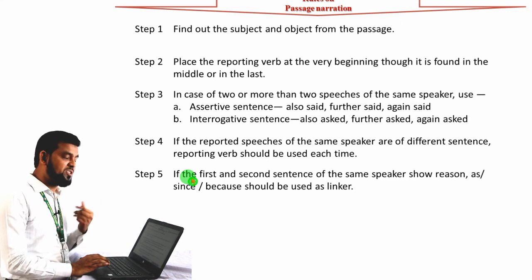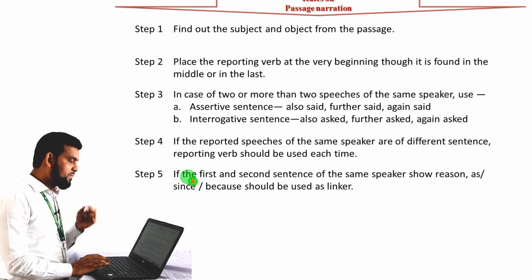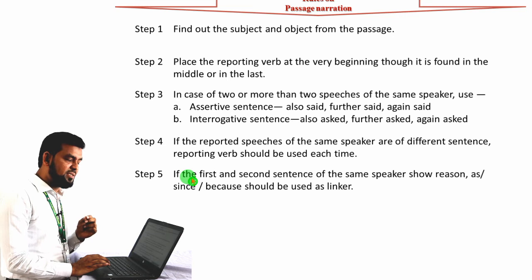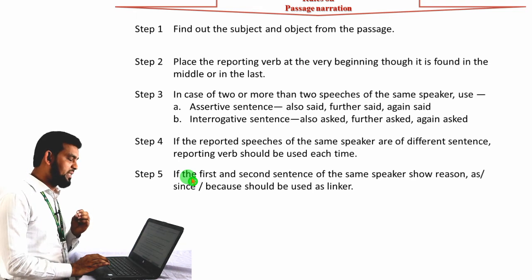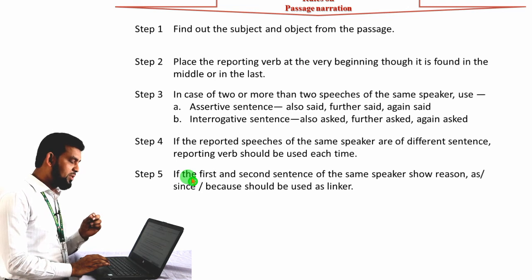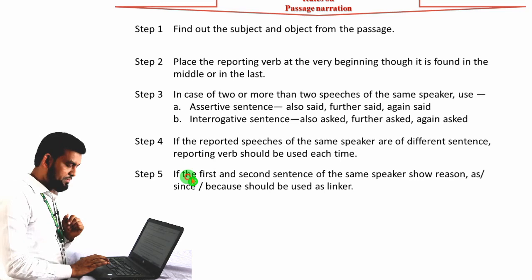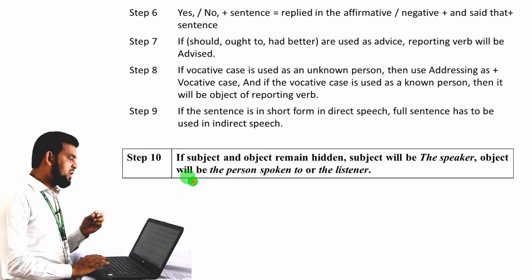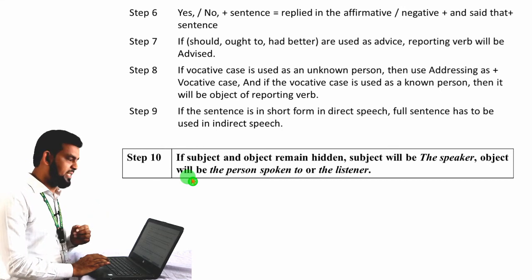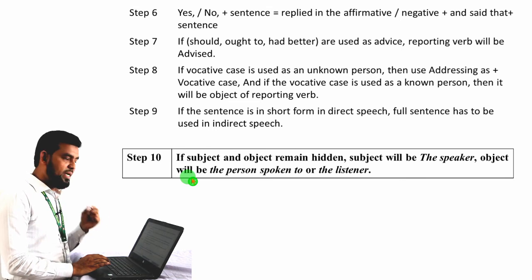Step 3: in case of two or more speeches of the same speaker, in the assertive sentence, also use 'said', 'further said', or 'again said'. Step 4: if the reported speeches of the same speaker are of different sentence types, the reporting verb should be used each time. Step 5: if the first and second sentences of the same speaker show reason, then 'as', 'since', or 'because' should be used as linkers between these two sentences. Step 6: if you find 'yes' or 'no' plus a sentence in the direct speech, use 'replied in the affirmative' or 'replied in the negative' and 'said that' plus the rest of the sentence. Step 7: if you find 'should', 'ought to', or 'had better' in the sentence as advice, the reporting verb will be 'advised'.